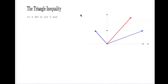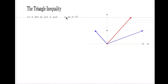The triangle inequality is an inequality which involves two complex numbers z and w. The reason for the name 'triangle inequality' is of course the geometrical representation of this inequality.